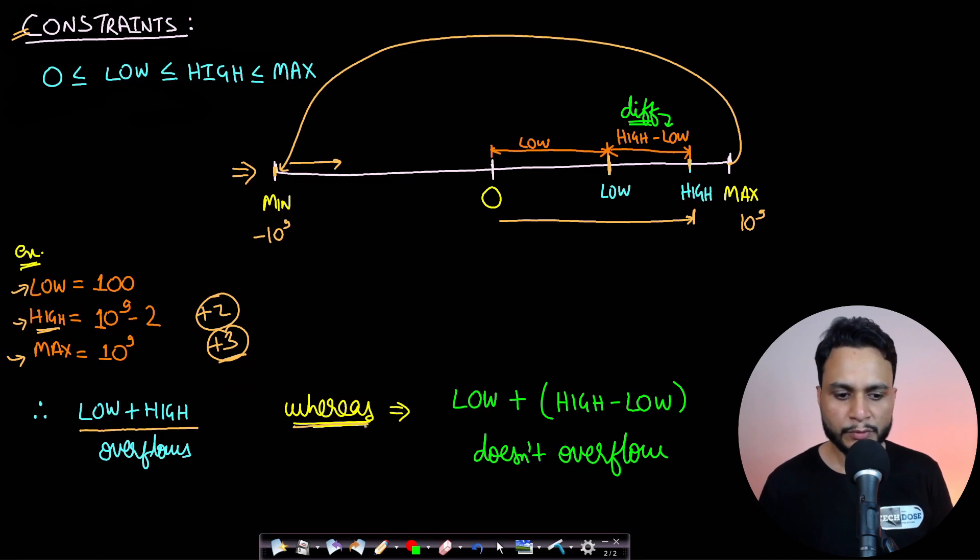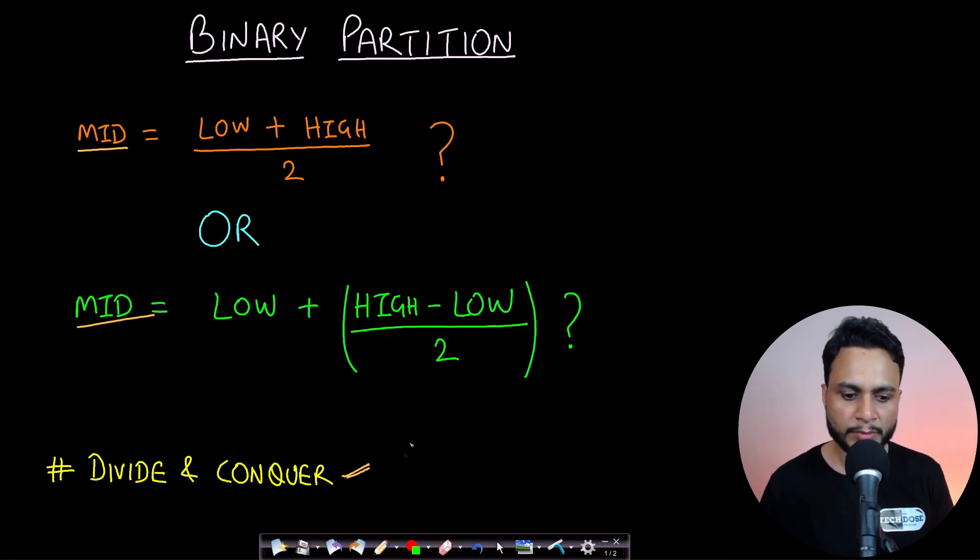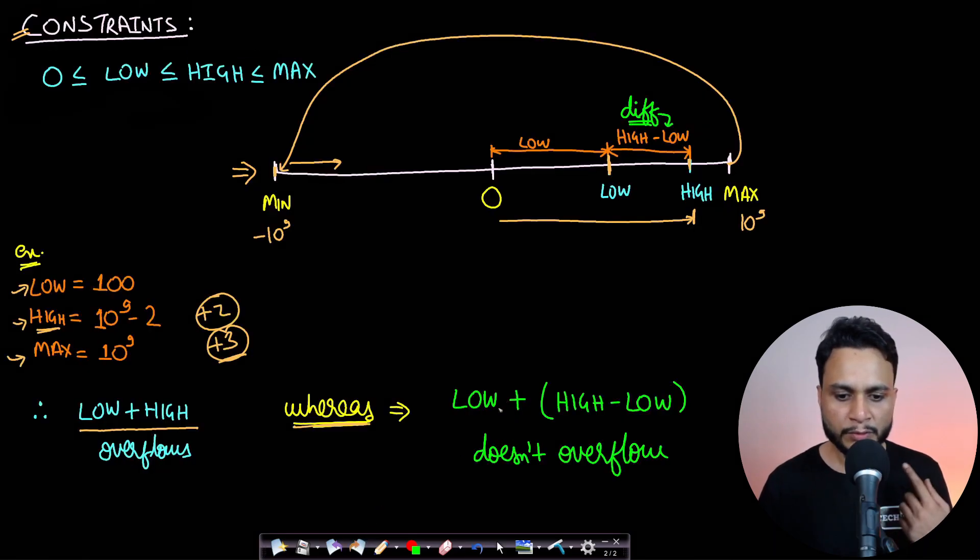Now if you look at the other formulation which is low plus high minus low by 2, you see that the low value is already guaranteed to be less than or equal to max, and also the high value will be less than or equal to max.